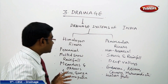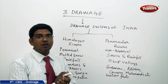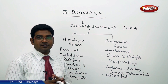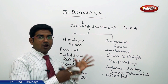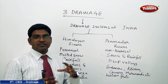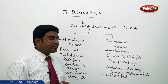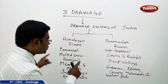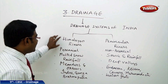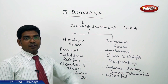Now, let us discuss about the drainage system of India. In India, how many types of rivers are there? Broadly, based on the landform existing in our Indian context, we can divide the entire rivers into two major categories: one is the Himalayan Rivers, and the other one is the Peninsular Rivers.